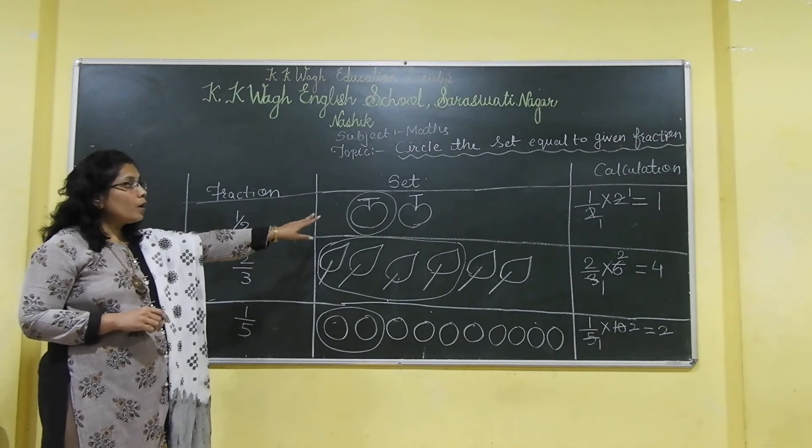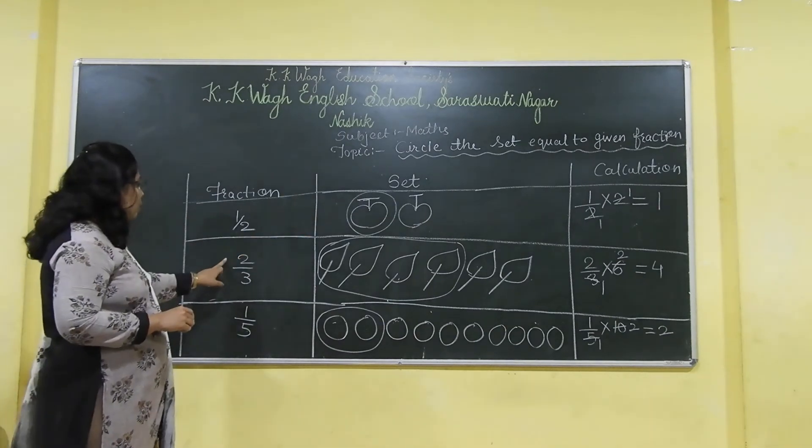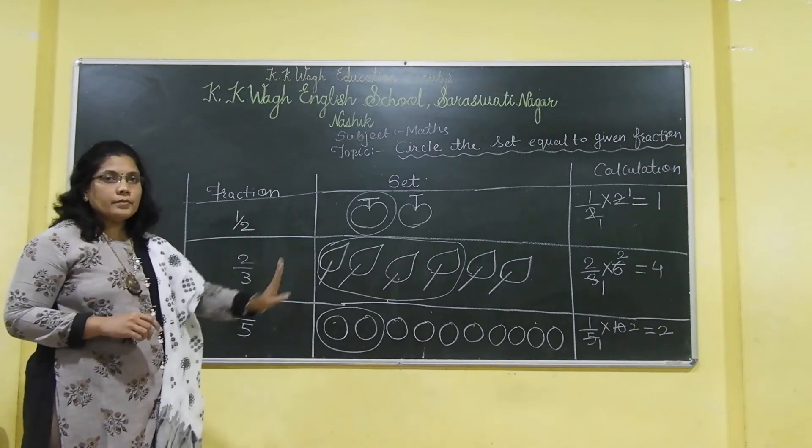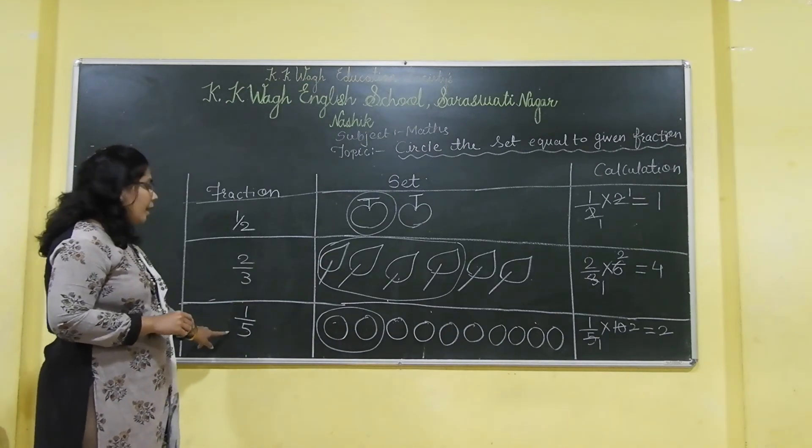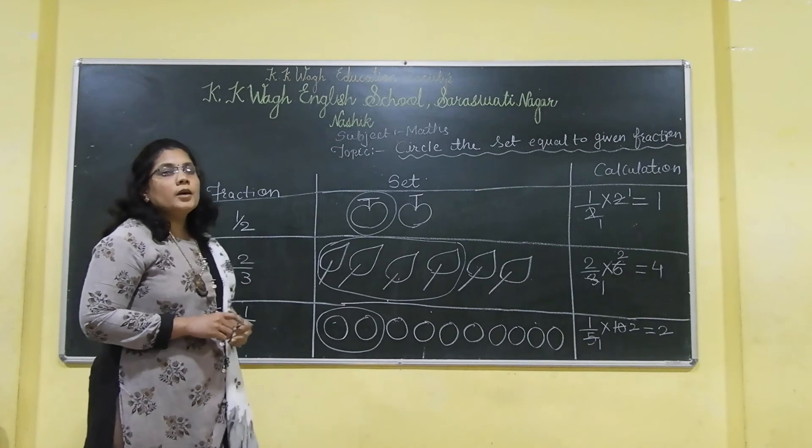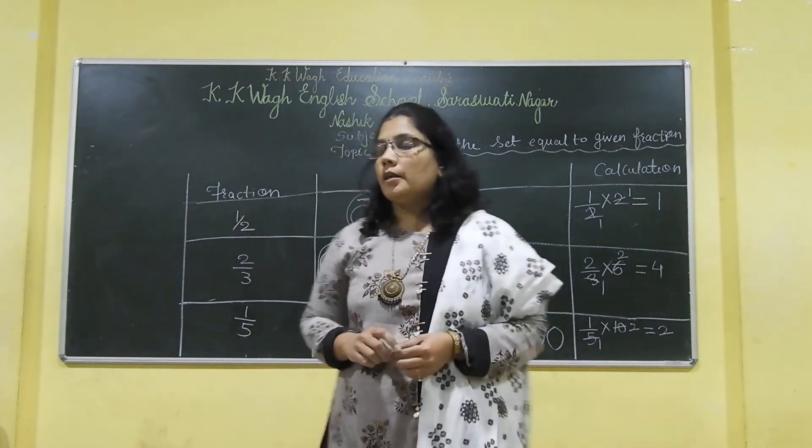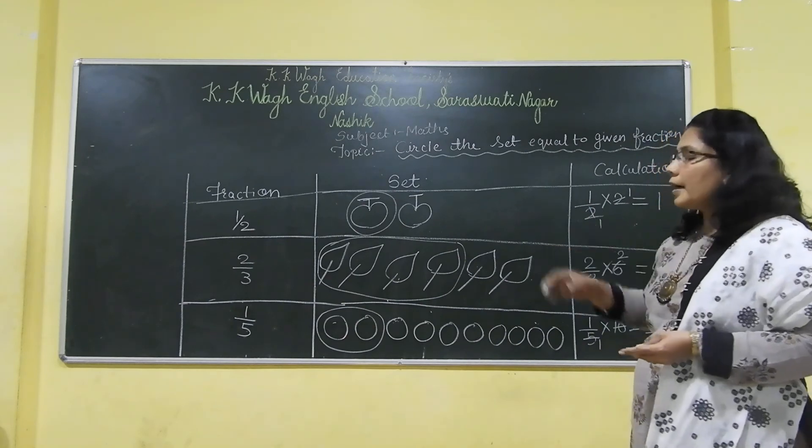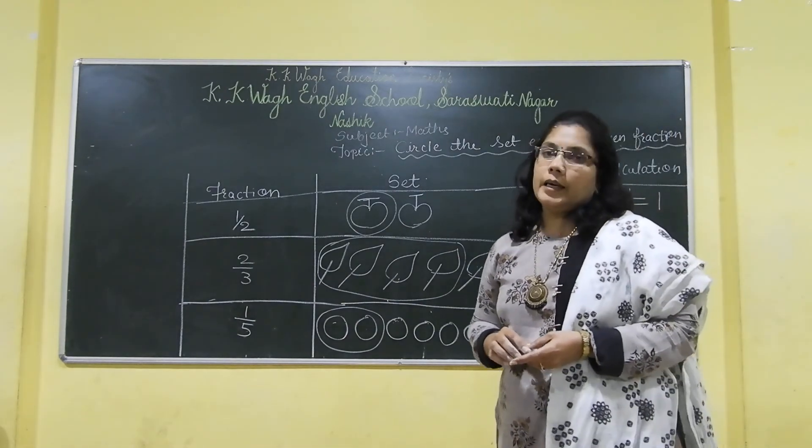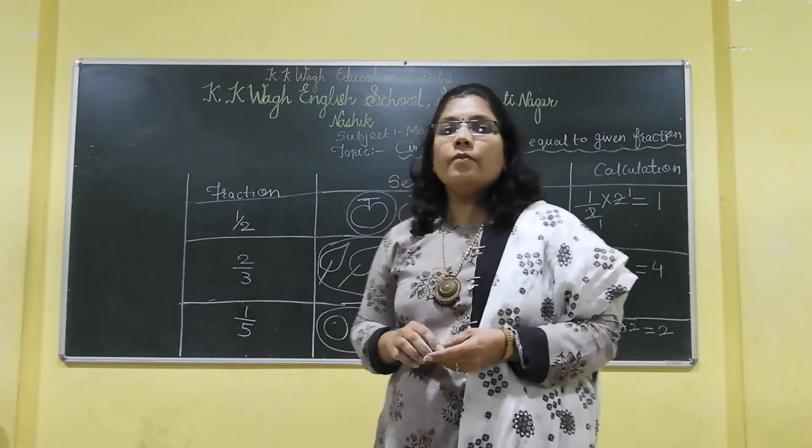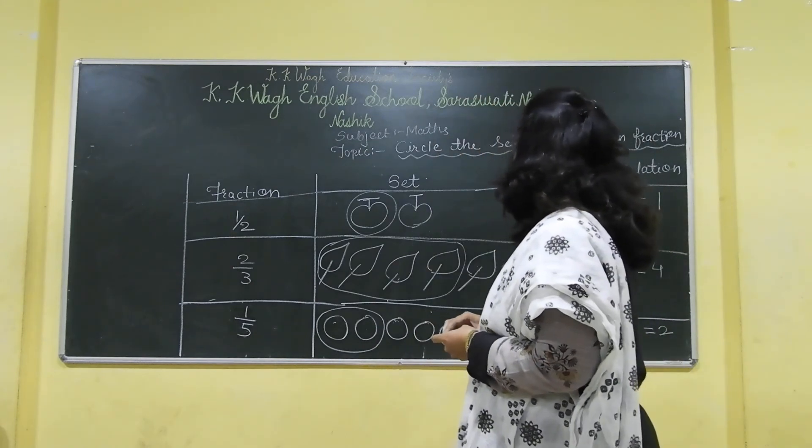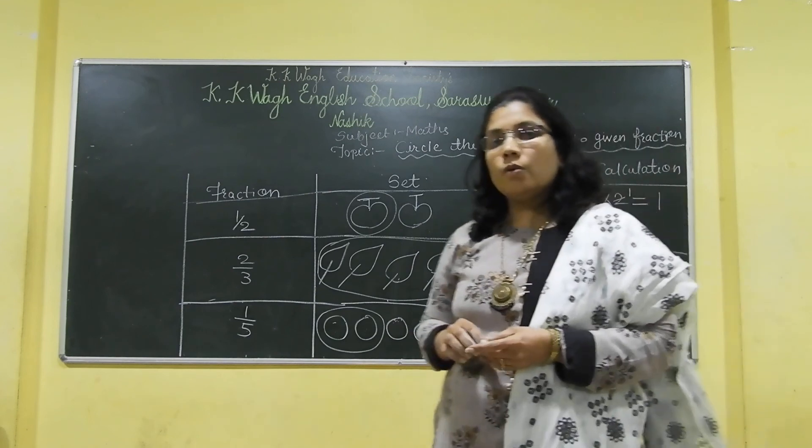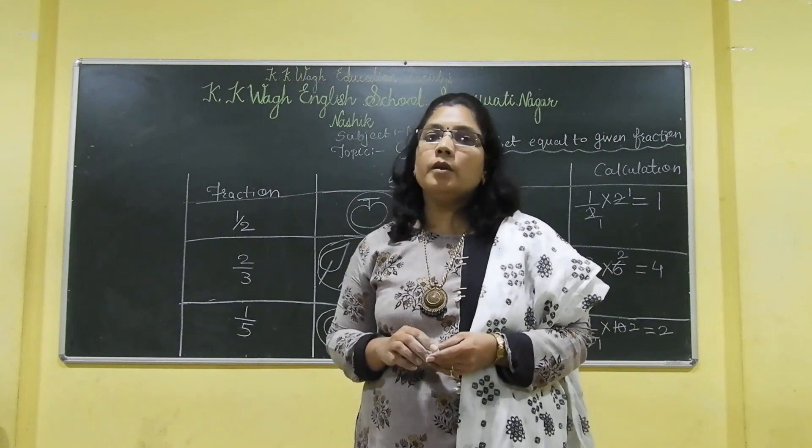This is the half. Half of 2 apples is 1. Here 2 by 3, the fraction of 2 by 3 is 4 leaves. And 1 by 5 is 2 balls. By this calculation, you will come to know how to find out the fraction correctly. In this way, we have learnt how to circle the set equal to the given fraction. You try this at home. Thank you.